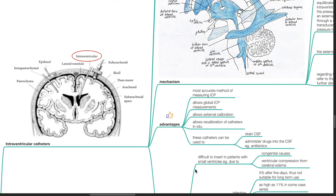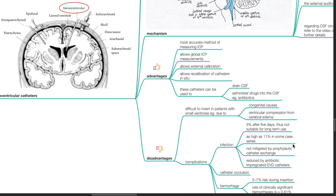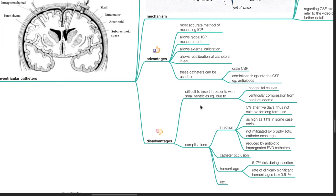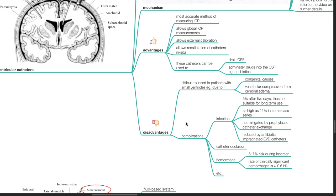Advantages of intraventricular catheters include: it is the most accurate method of measuring ICP, it allows global ICP measurements, it allows external calibration and recalibration of catheters in situ. These catheters can be used to drain CSF and administer drugs such as antibiotics into the CSF. Disadvantages: It is difficult to insert in patients with small ventricles, for example due to congenital causes or ventricular compression from cerebral edema. Complications of EVD include infection, catheter occlusion, and hemorrhage.